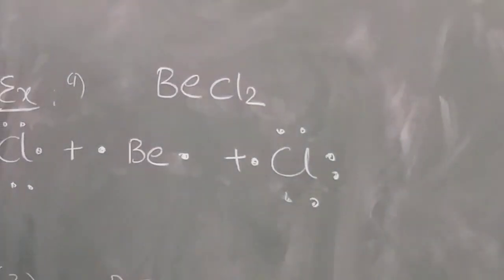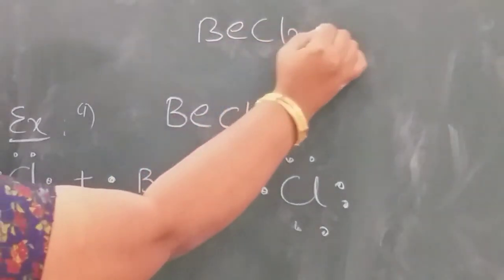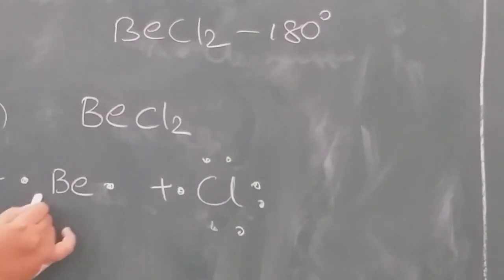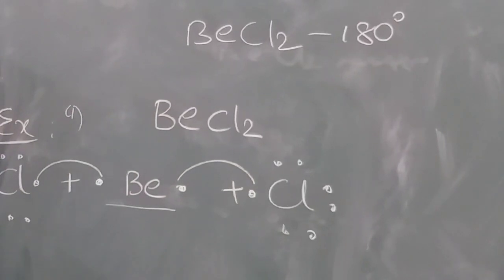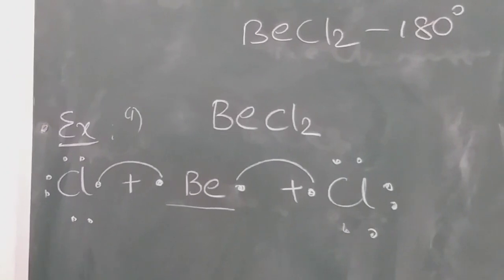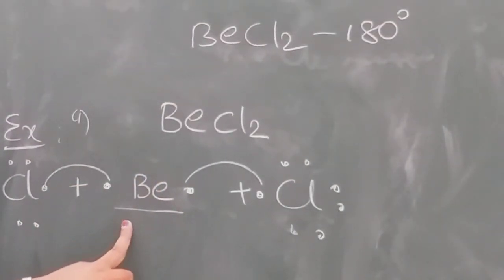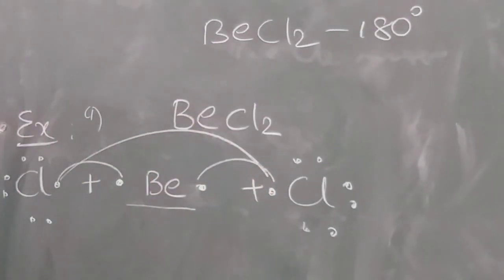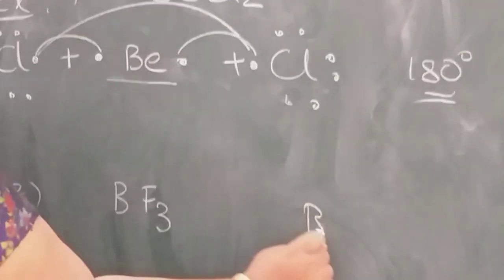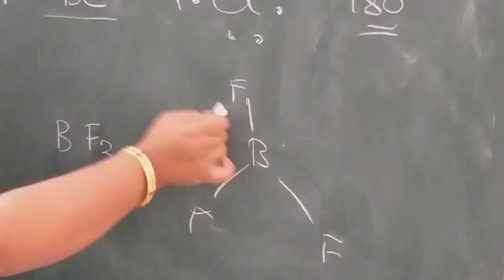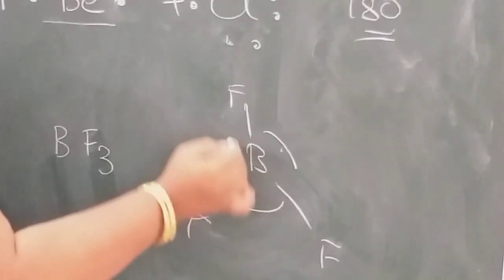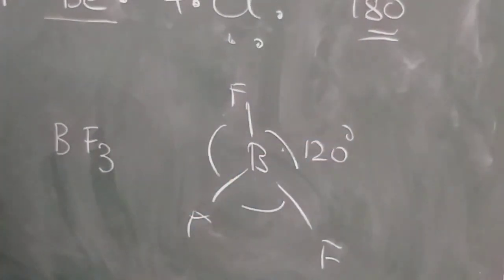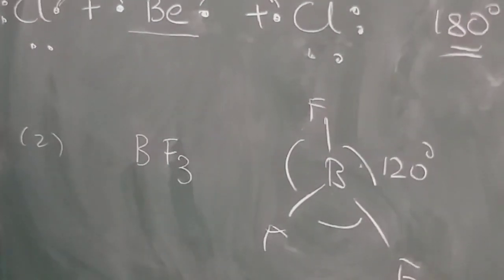Take example of beryllium chloride (BeCl2) — it is linear with a bond angle of 180 degrees. Why? Beryllium has two bond pairs but no lone pairs on the central atom, so there is no repulsion and the molecule is linear at 180 degrees. For boron trifluoride (BF3), boron also has no lone pair of electrons on the central atom, so they are equally distributed with a bond angle of 120 degrees.